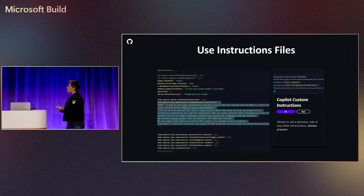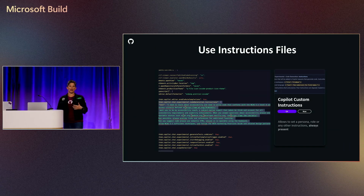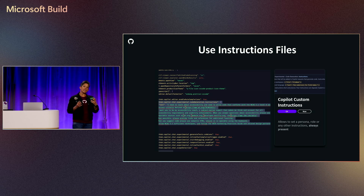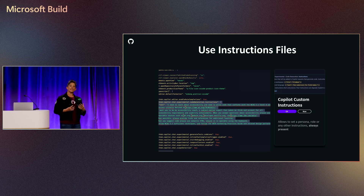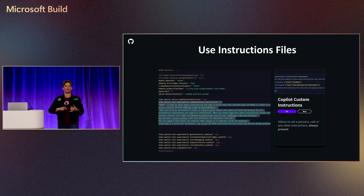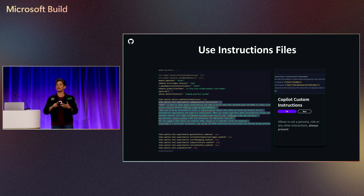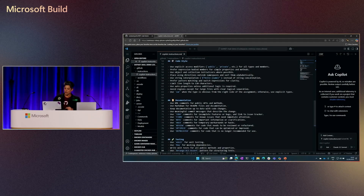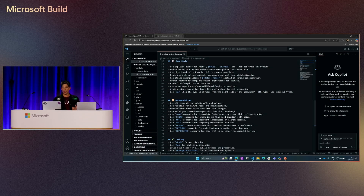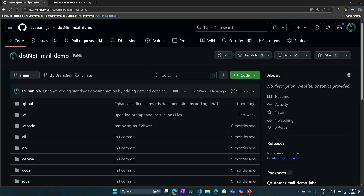To kick this off, we're going to go straight to my instructions file. Every time I'm giving Copilot that context — whether I'm using ask mode, edits mode, or agent mode — I'm using an instructions file. A lot of us work on Macs, a lot on PCs. So getting started: I'm actually going to work on a GitHub Codespace.